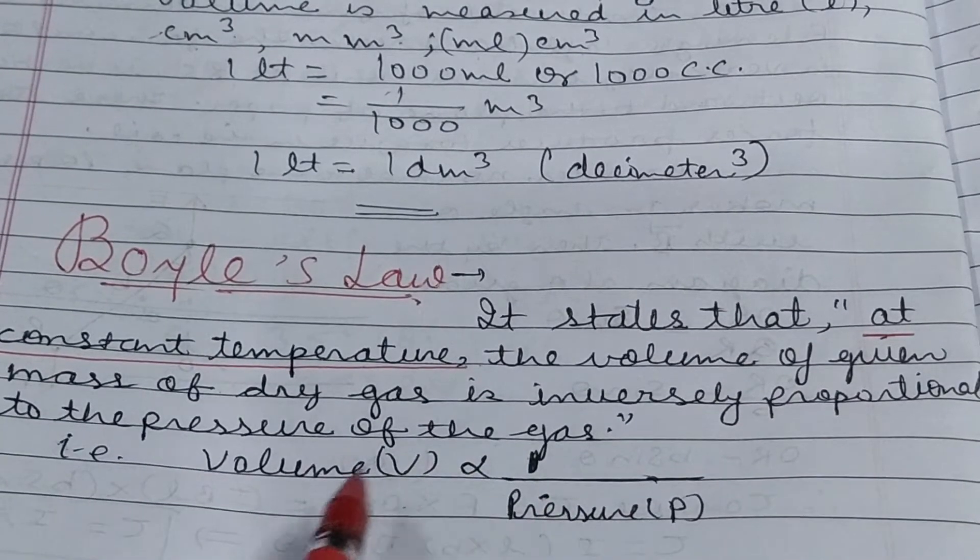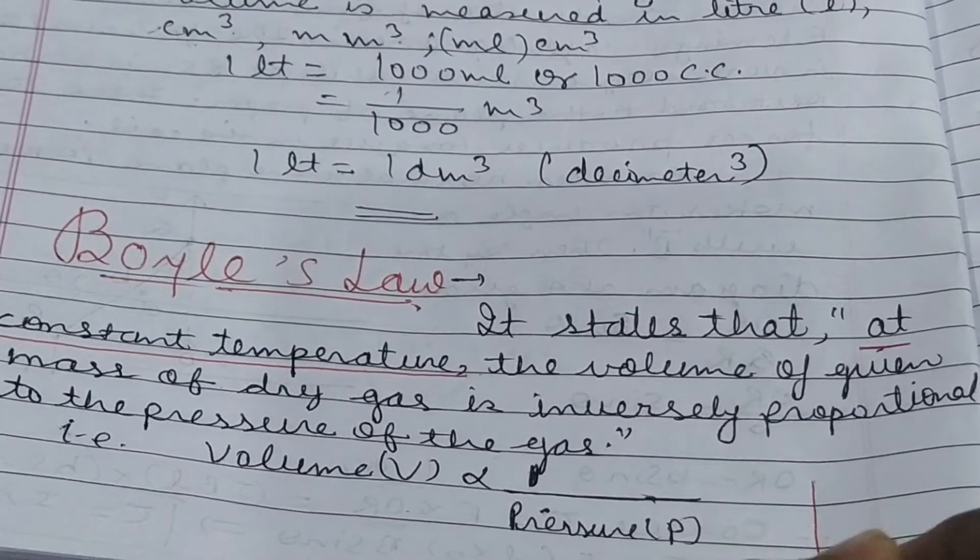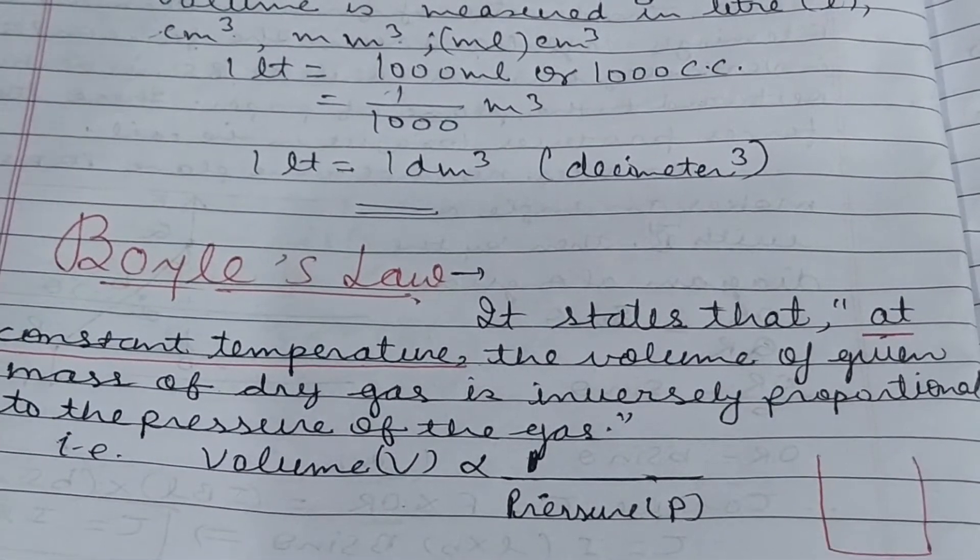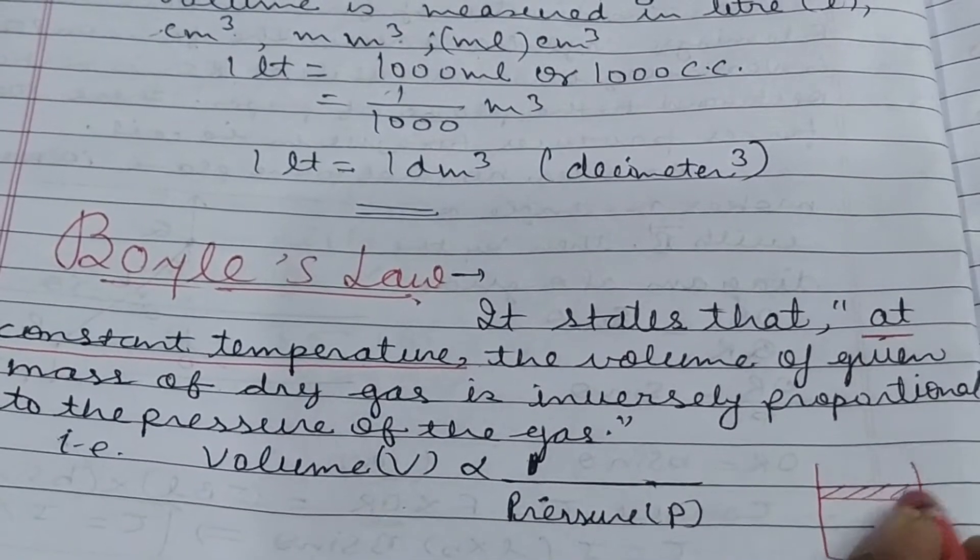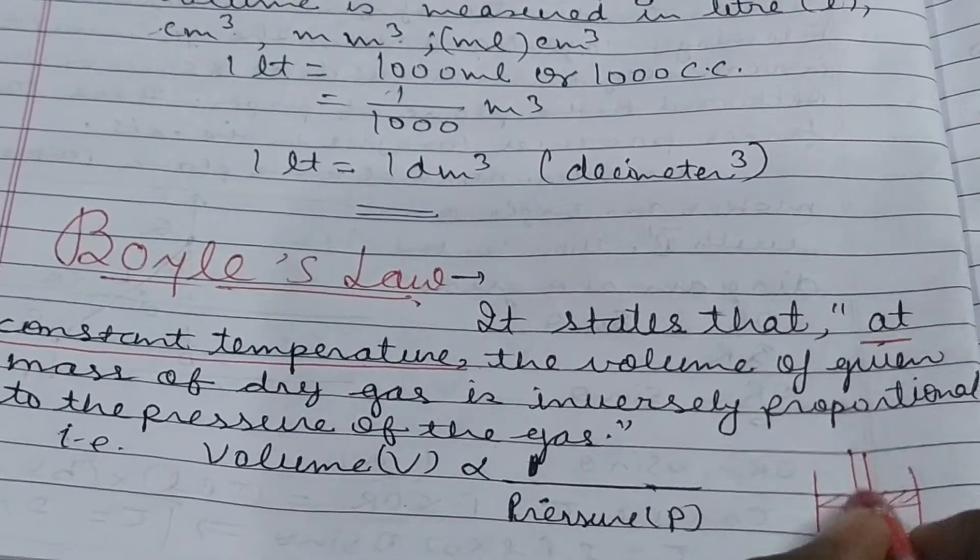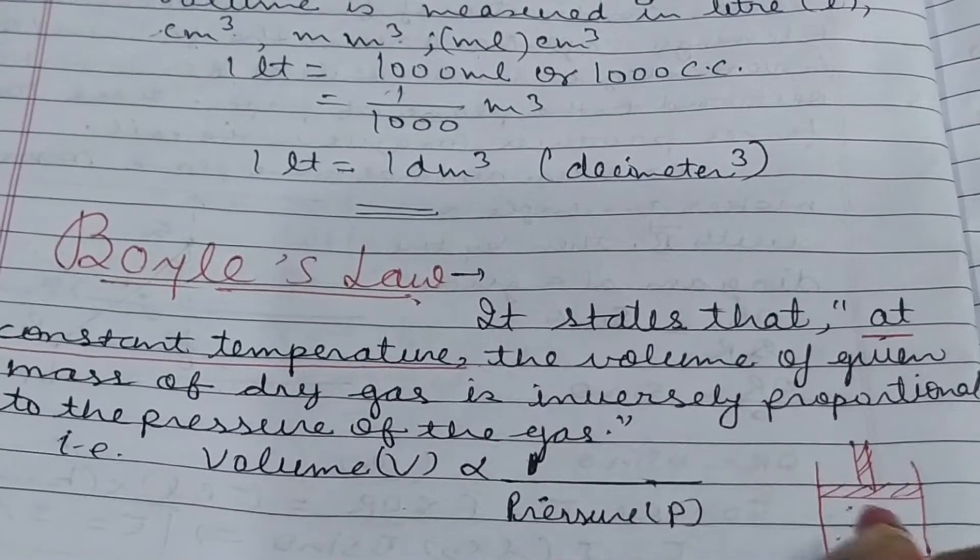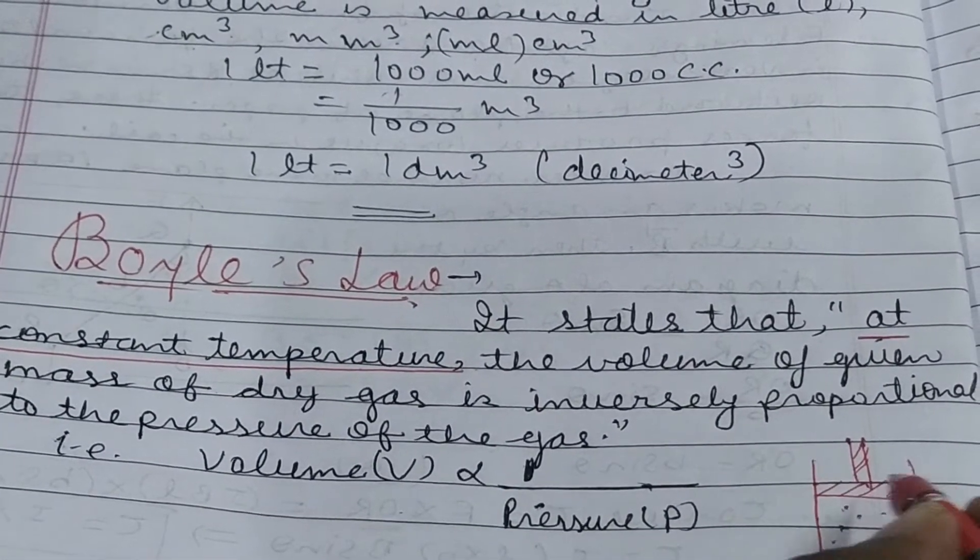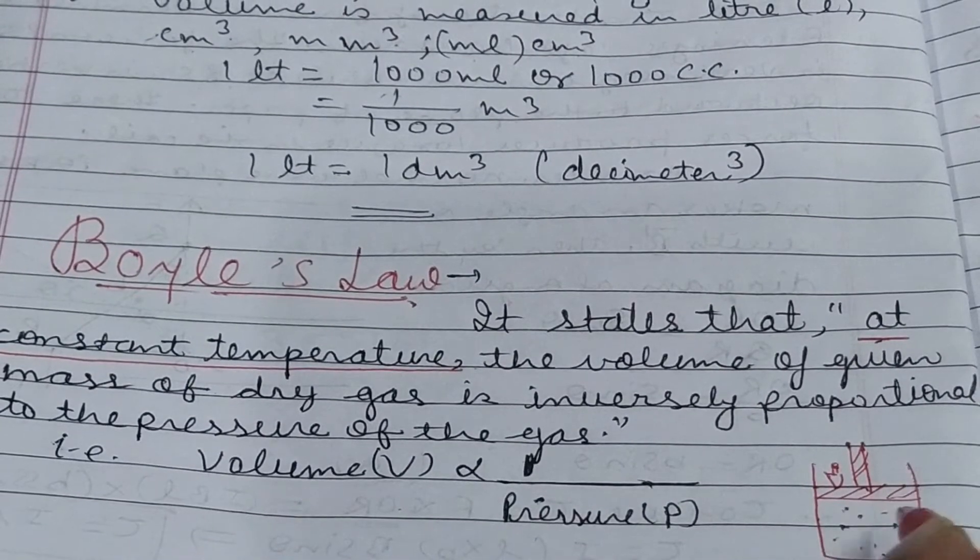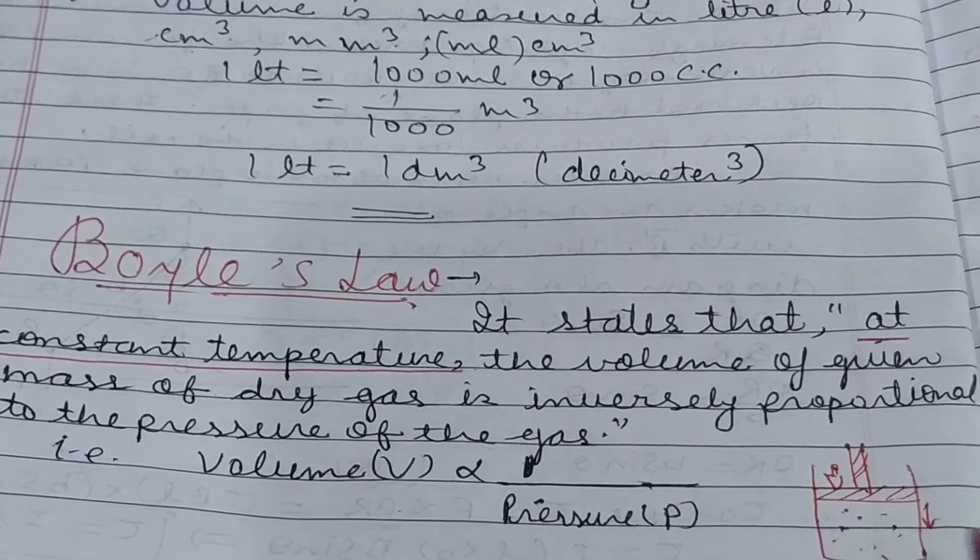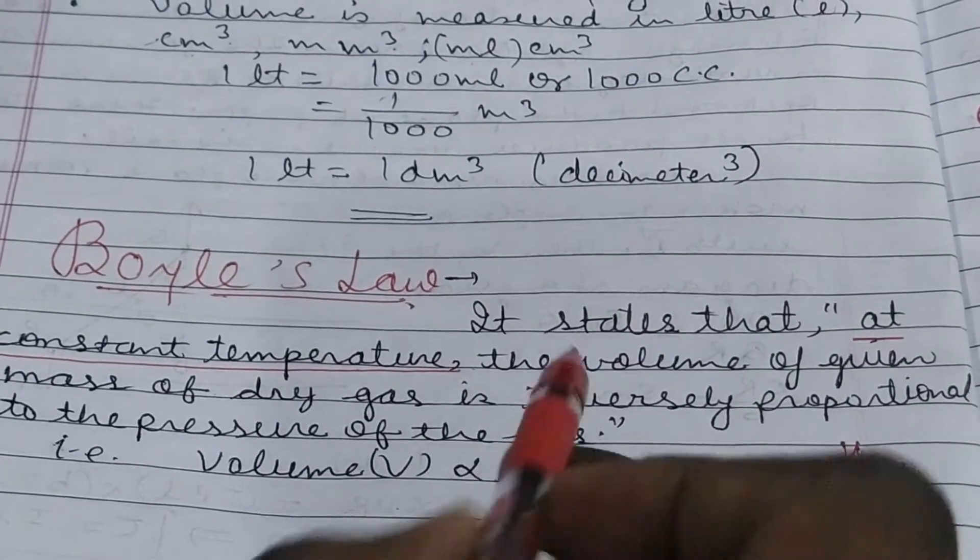More the pressure of the gas, lesser is the volume. If there is a cylinder with gas and a movable frictionless piston above it enclosing the gas, what happens if you increase pressure? Suppose you put weight on the piston. The piston will move down and the volume of gas will decrease.